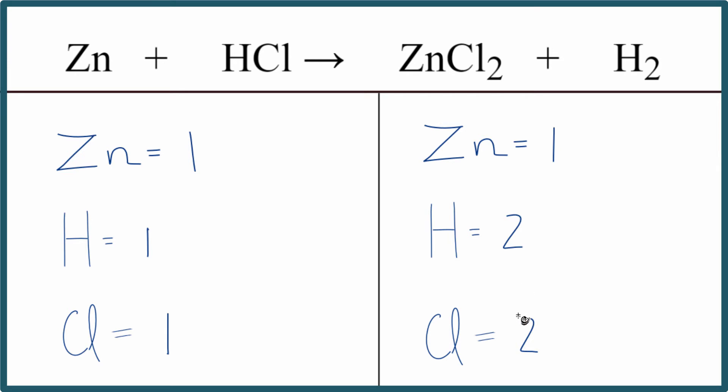To balance it, it looks like we need to get two hydrogens and two chlorines. So we need to double these. And we can do that by putting a coefficient of two in front of the HCl.